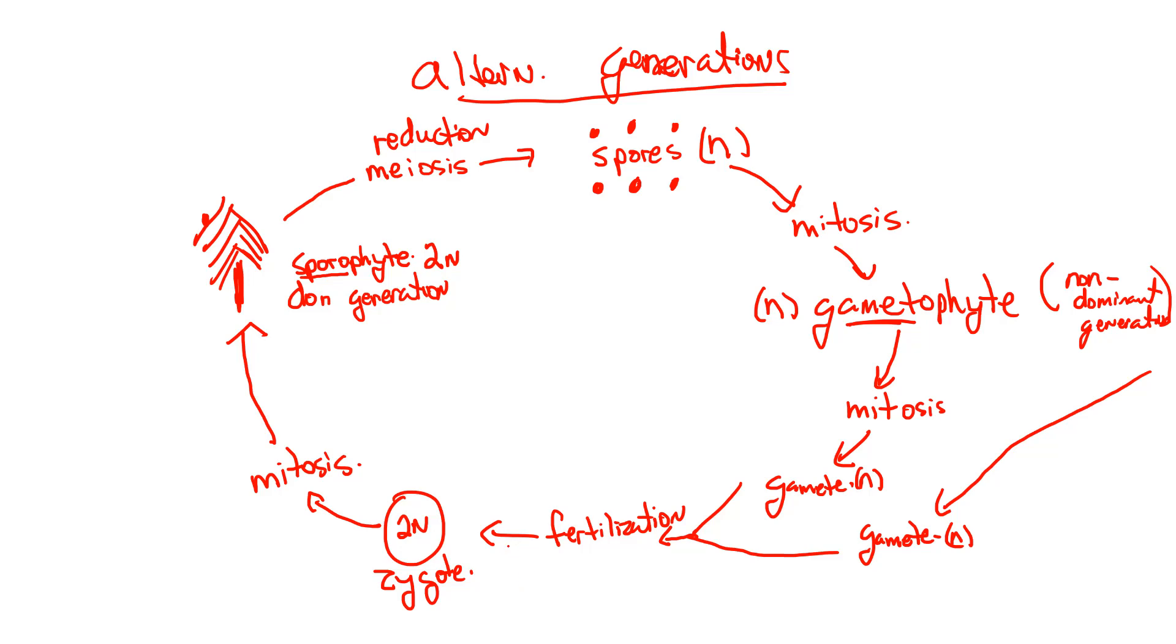Best way to study this, rewrite this a number of times. You rewrite this, you'll embed that into long-term memory. So we're alternating between a dominant sporophyte, diploid, and a non-dominant haploid gametophyte. That's where this alternations of generations come from. Any issues with this, give me an email, we'll go over it.